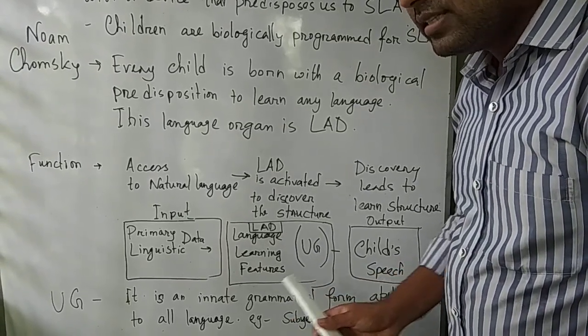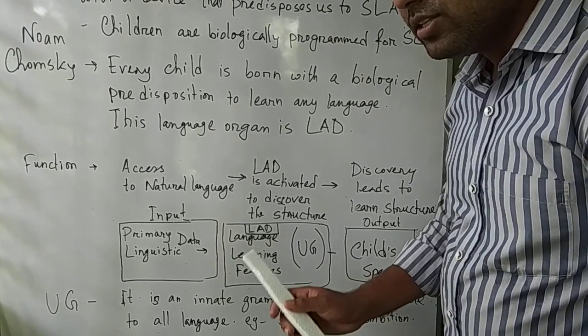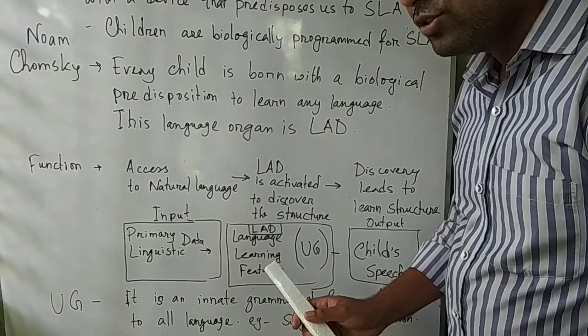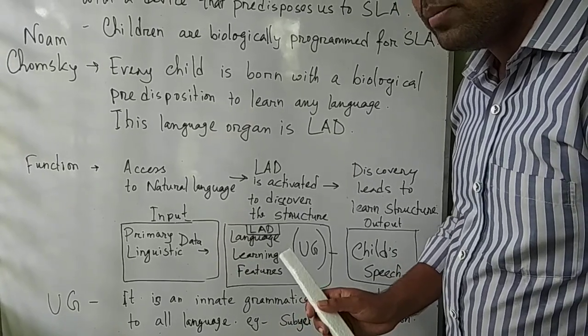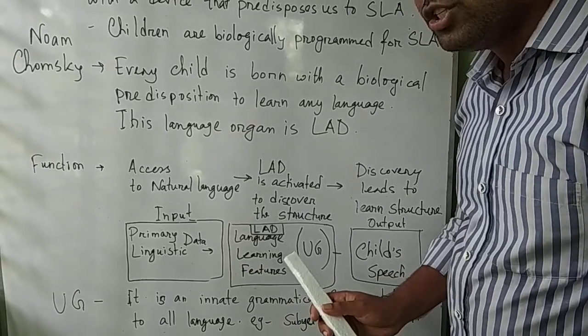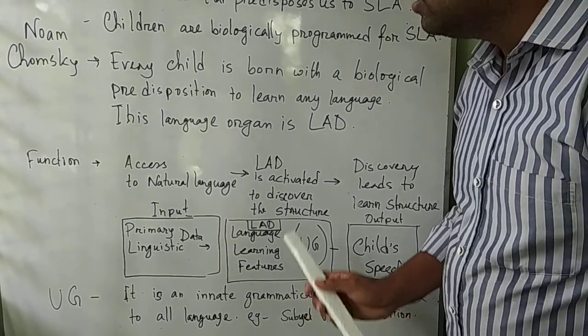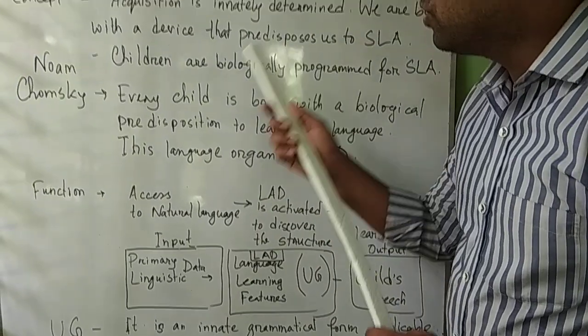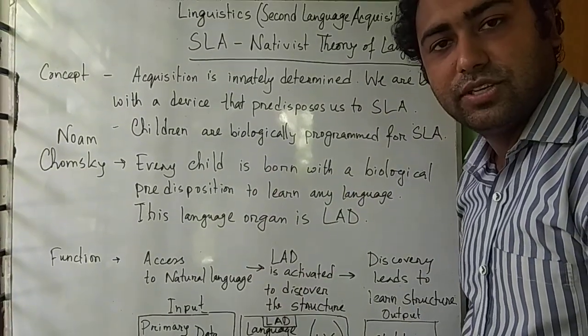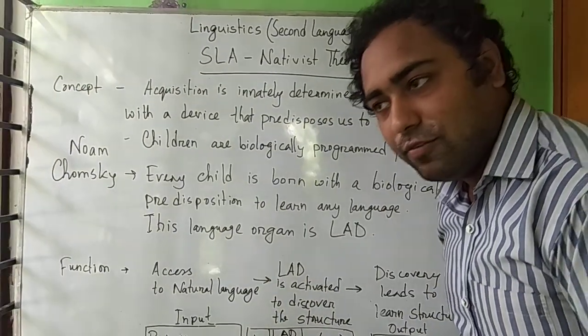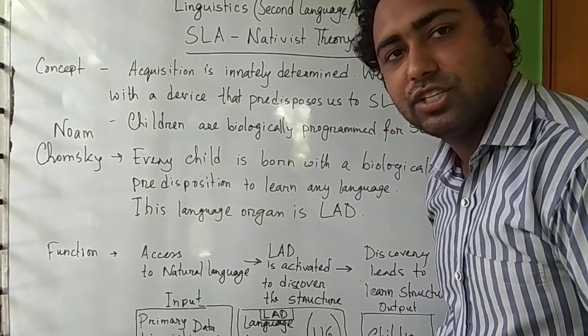Language is built up in children and gradually develops after each step. This is the overall concept of nativist theory. Thank you very much for watching this video.